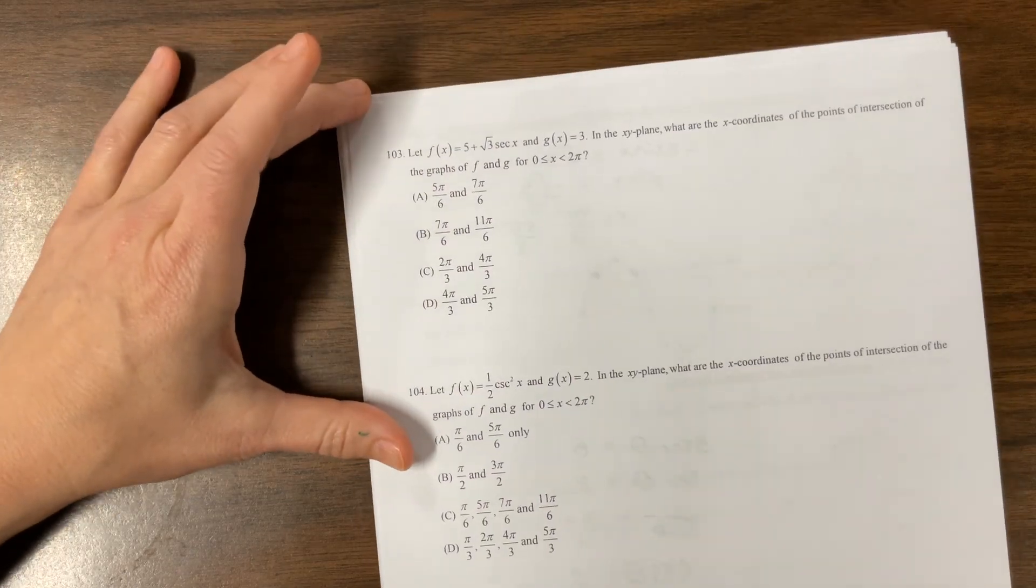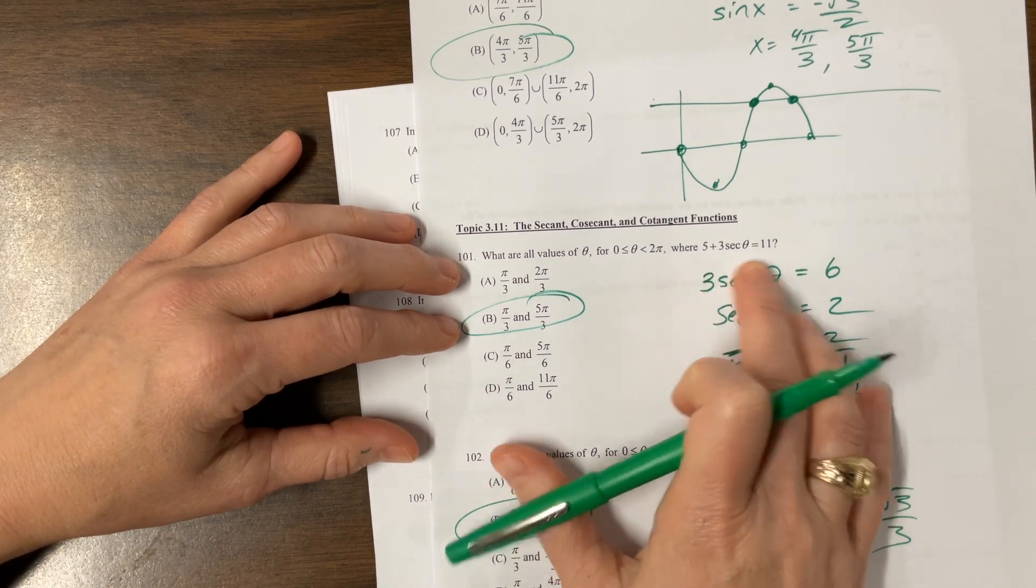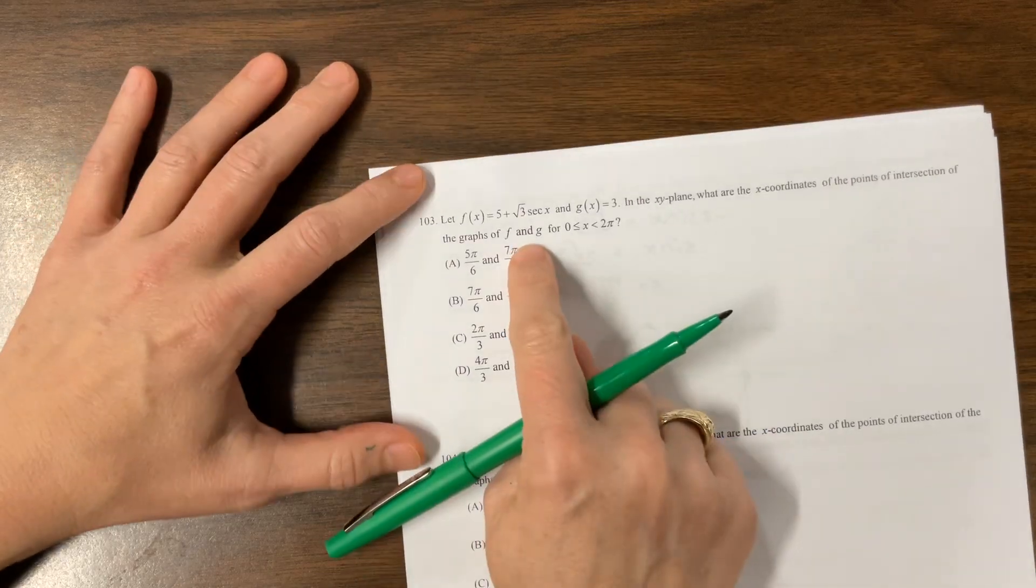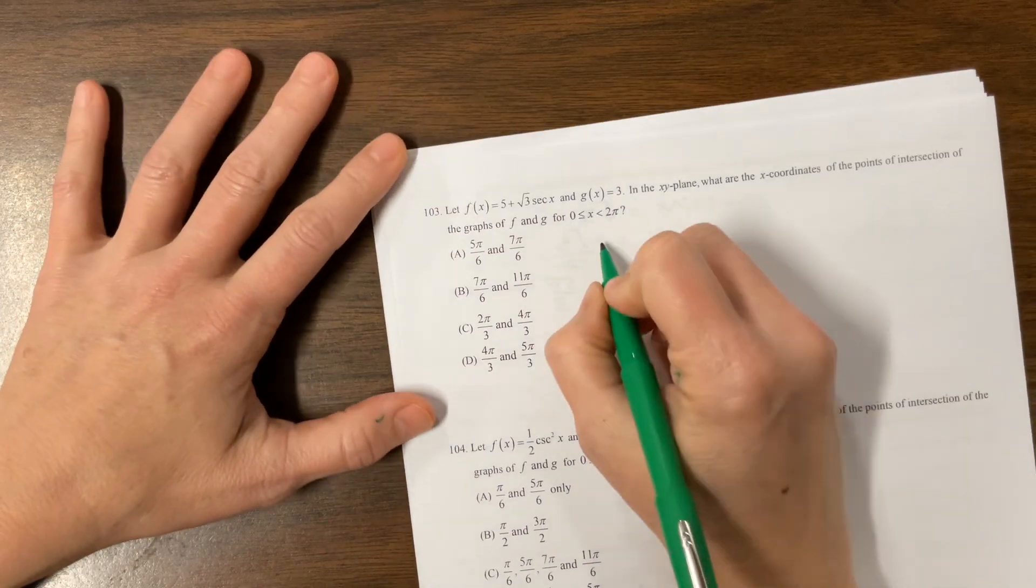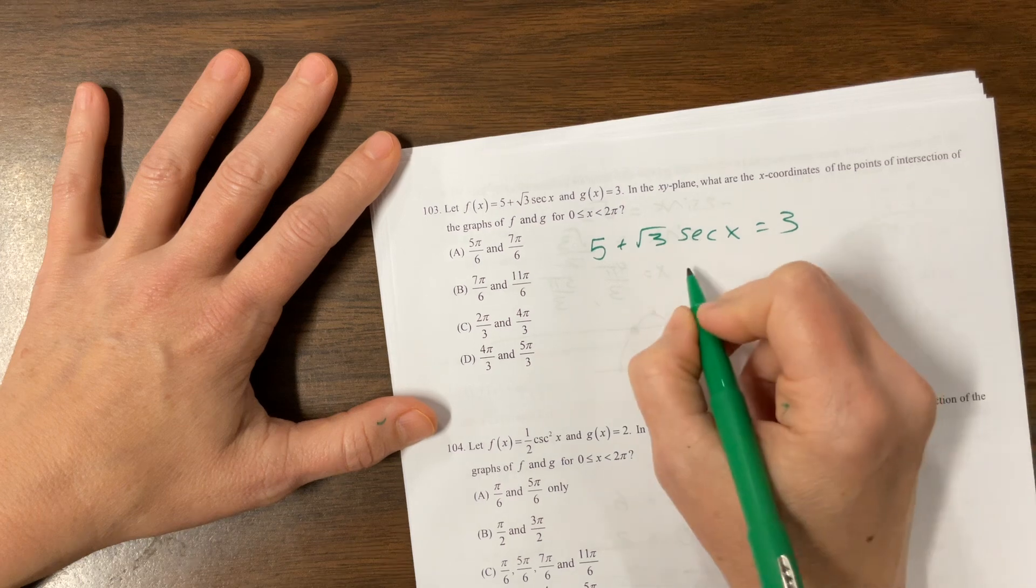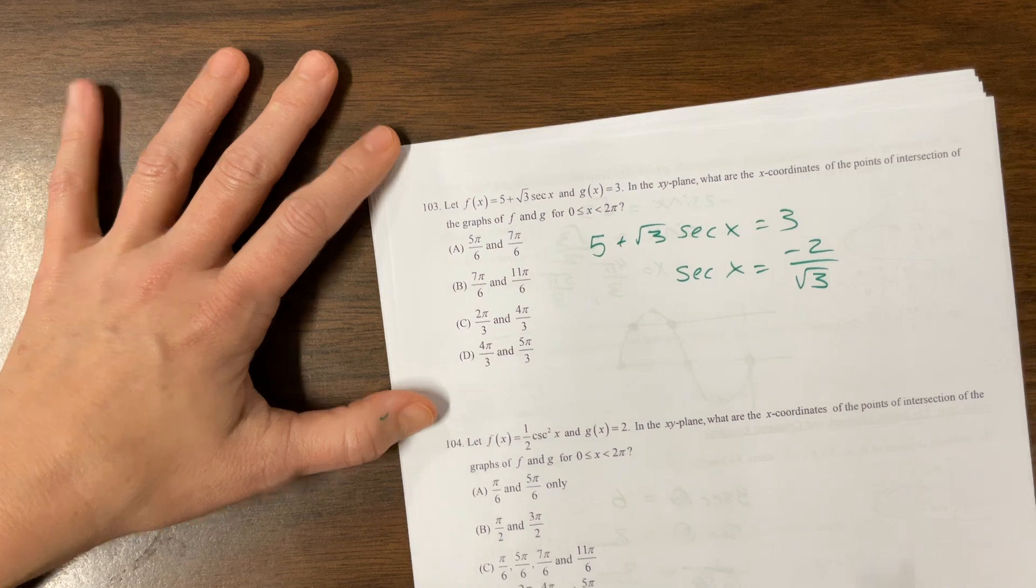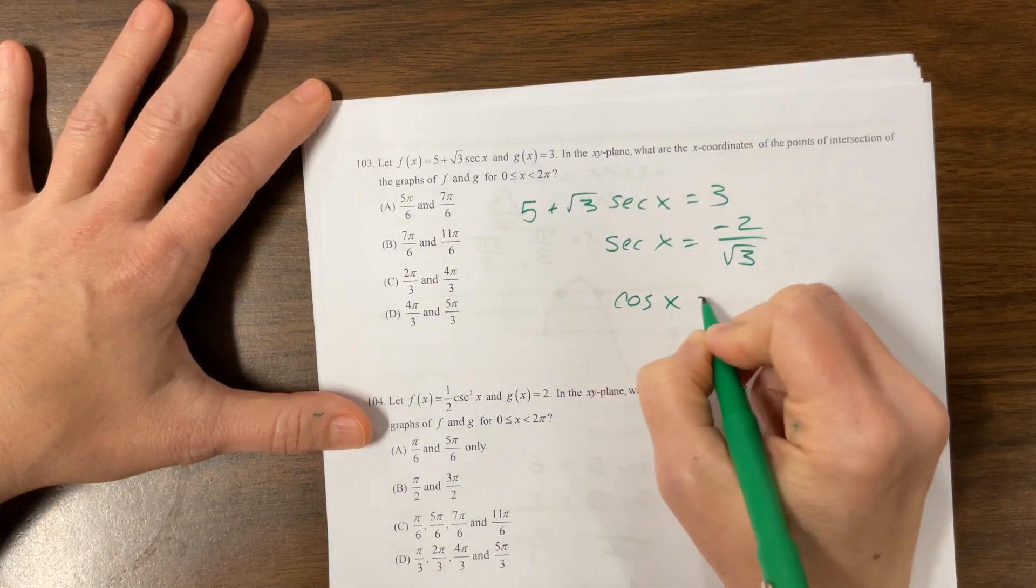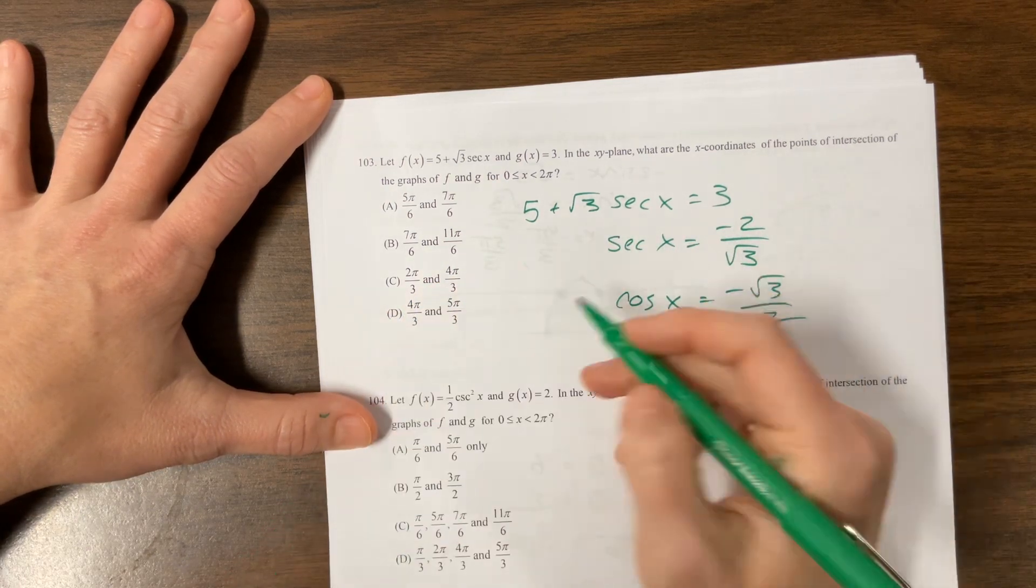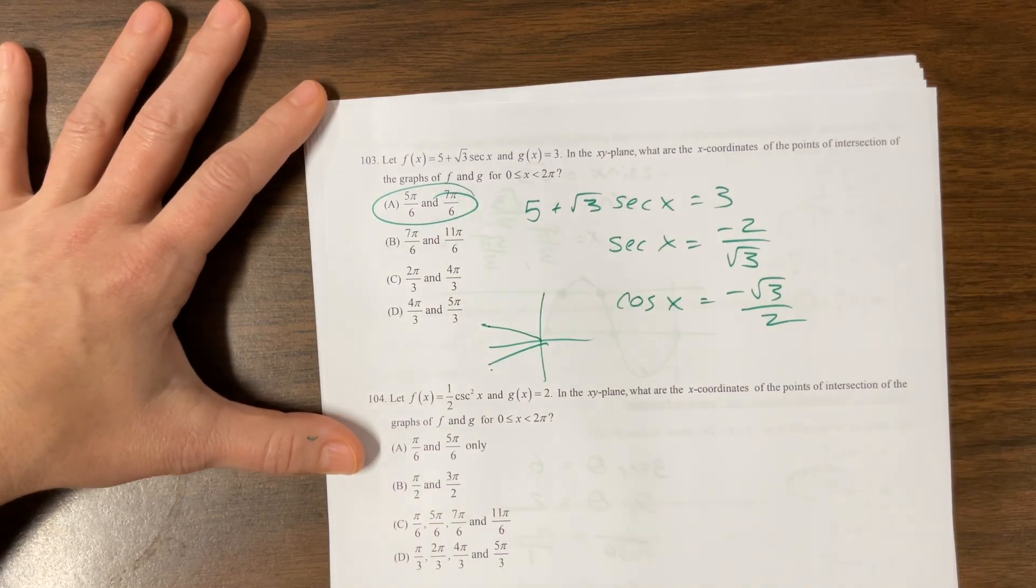That feels similar. 5 plus root 3 secant. It was 5 plus 3 secant. It's the same idea. We subtract 5, we get negative 2, and then I divide by, so I get negative 2 divided by root 3, which secant's buddy is cosine. So now cosine is going to be equal to negative root 3 over 2, which is the way far out. I'm thinking here and here on the unit circle. So 5 pi over 6 and 7 pi over 6.